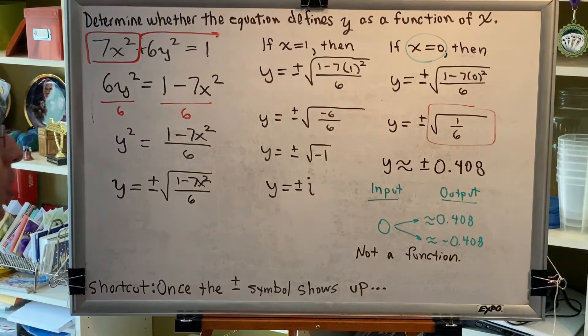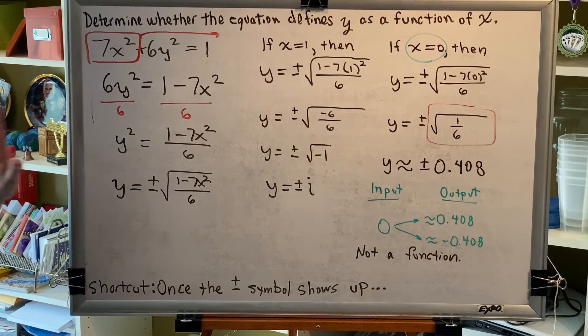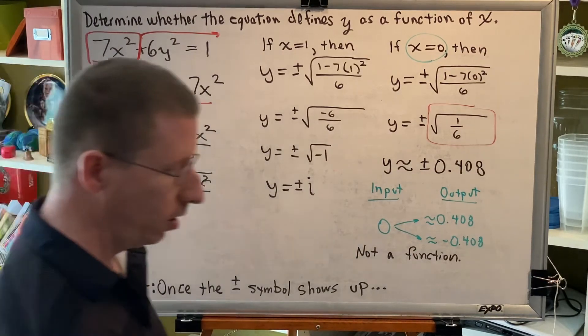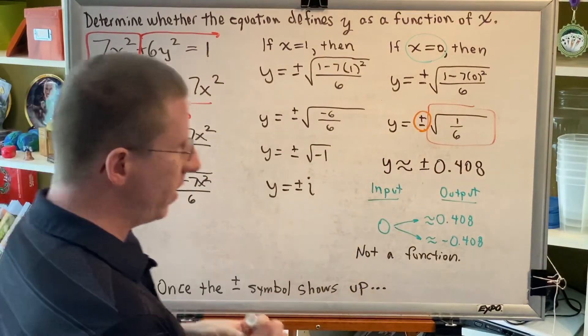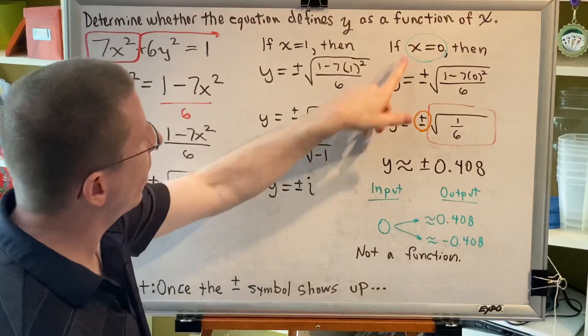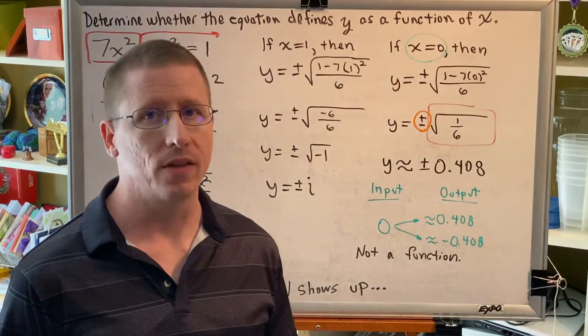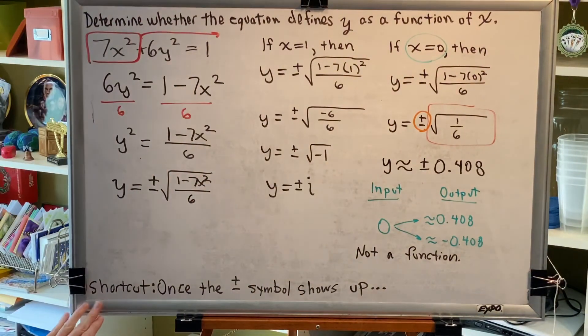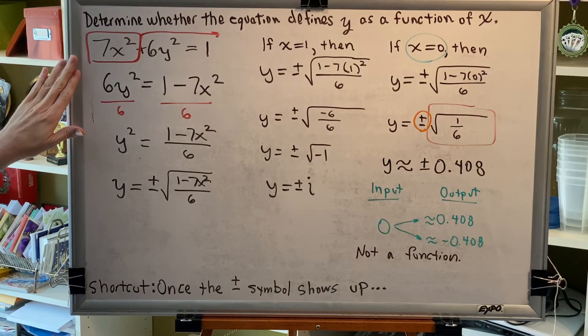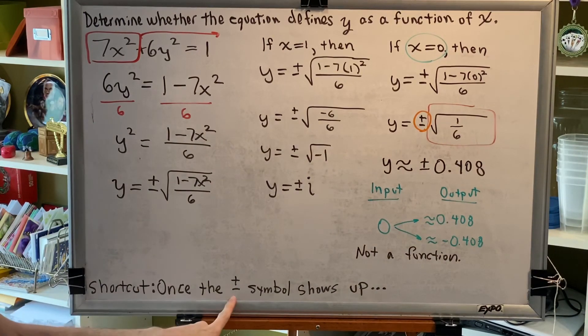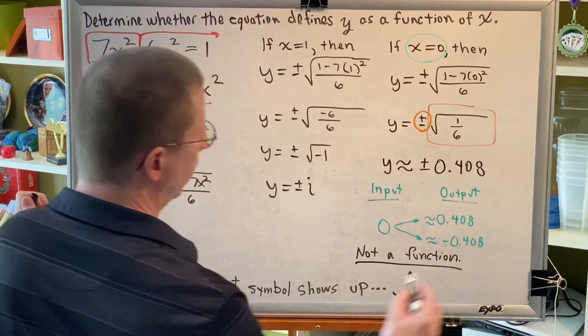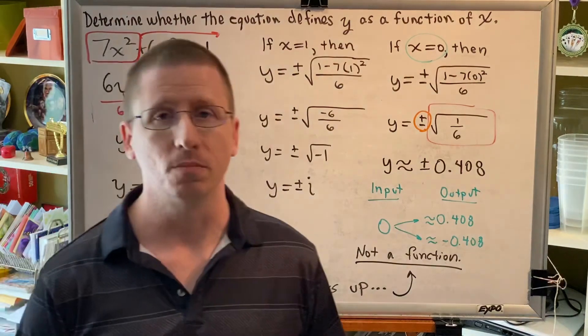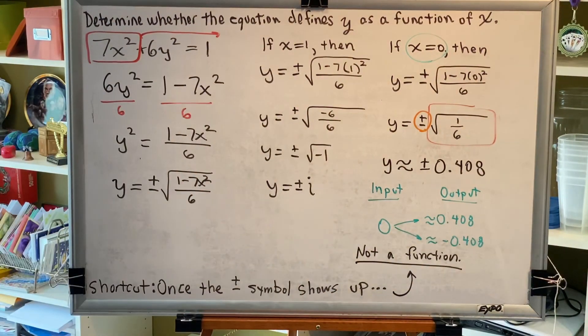Now, let's learn a shortcut. What part of our algebra resulted in it not being a function? The answer? This plus or minus symbol. This plus or minus symbol is the reason why one x gave us two y's. So, the shortcut is when you're trying to determine if an equation defines y as a function of x, once the plus or minus symbol shows up, you can conclude that the answer will be not a function.